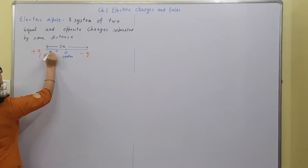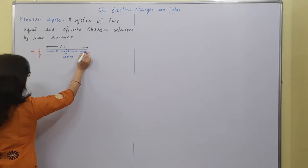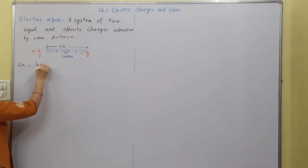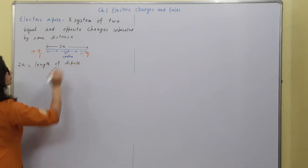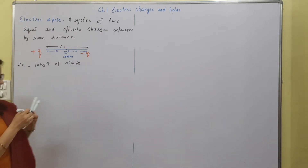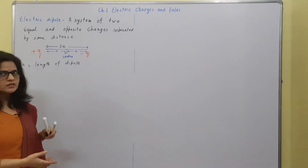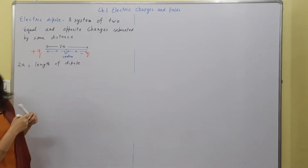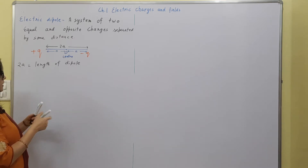This separation is a and this separation is also a. And 2a is the length of the dipole. There is a specific direction which gives the direction of the dipole, and that quantity which is represented as the product of either charge and the separation between the charges is called as dipole moment.